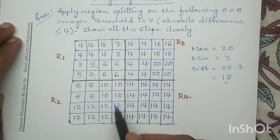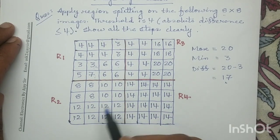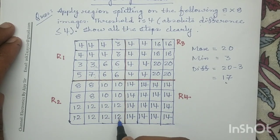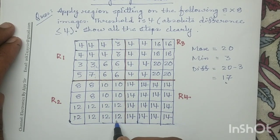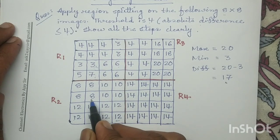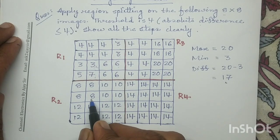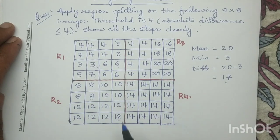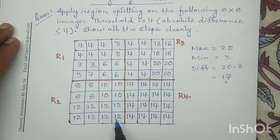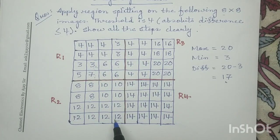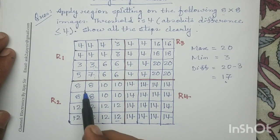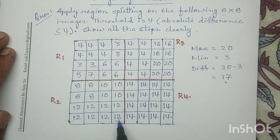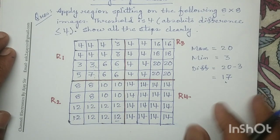Next we move on to region R2. In region R2, the maximum value is 12 and the minimum value is 8. 12 minus 8 is 4, so again this 4 is acceptable and we will not split region R2.